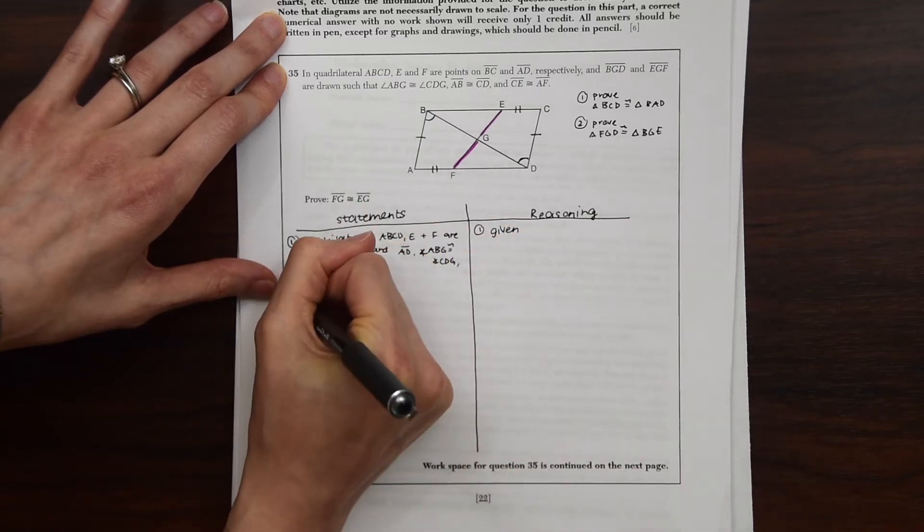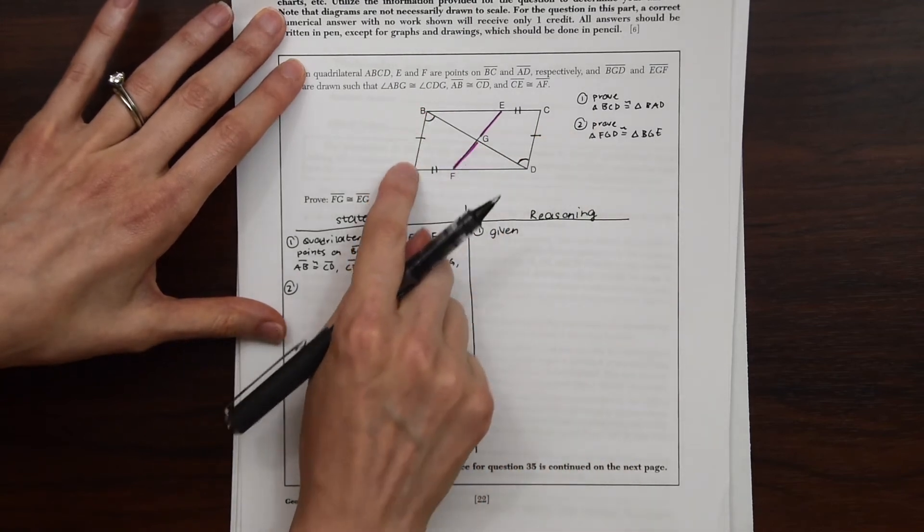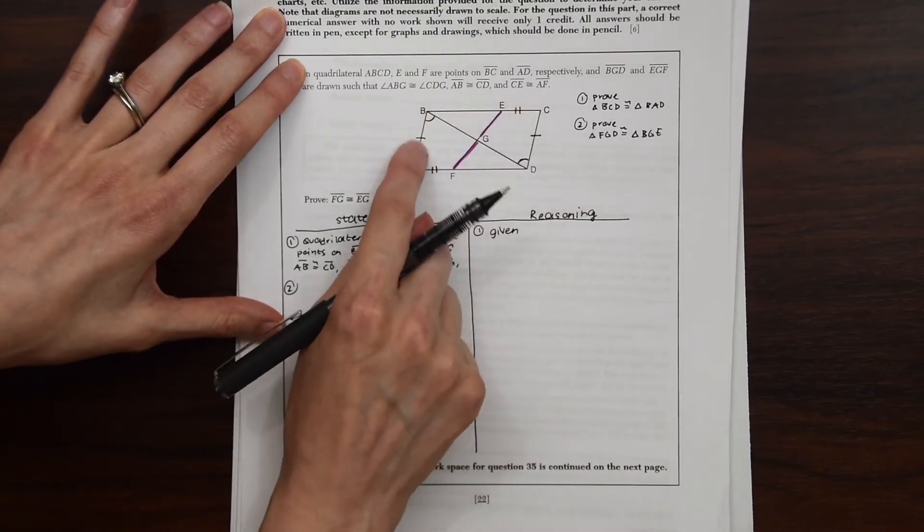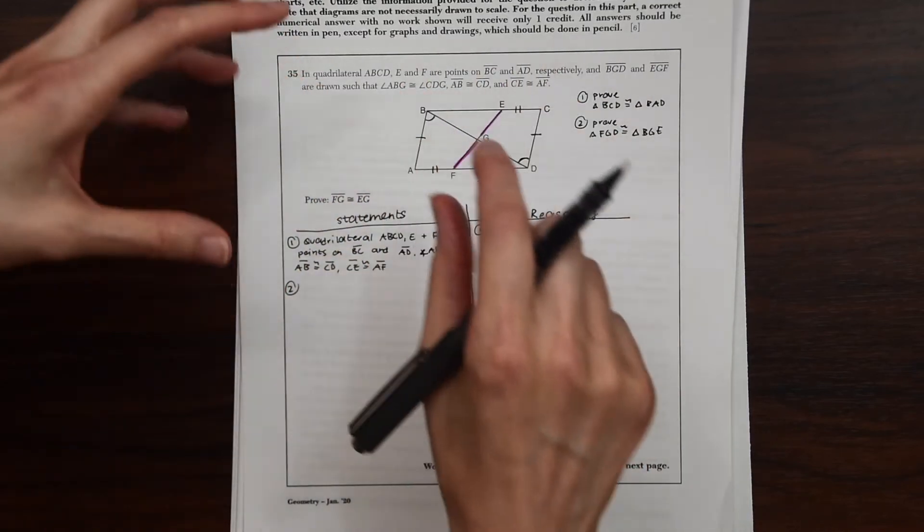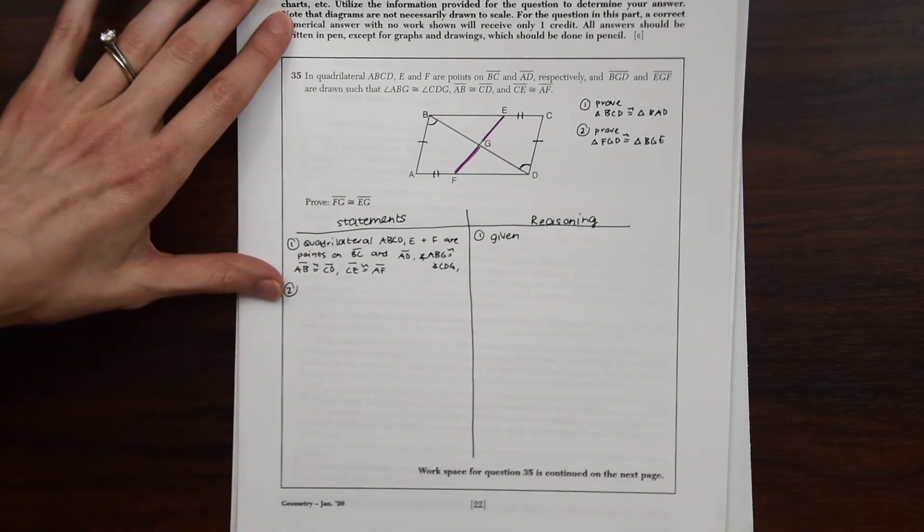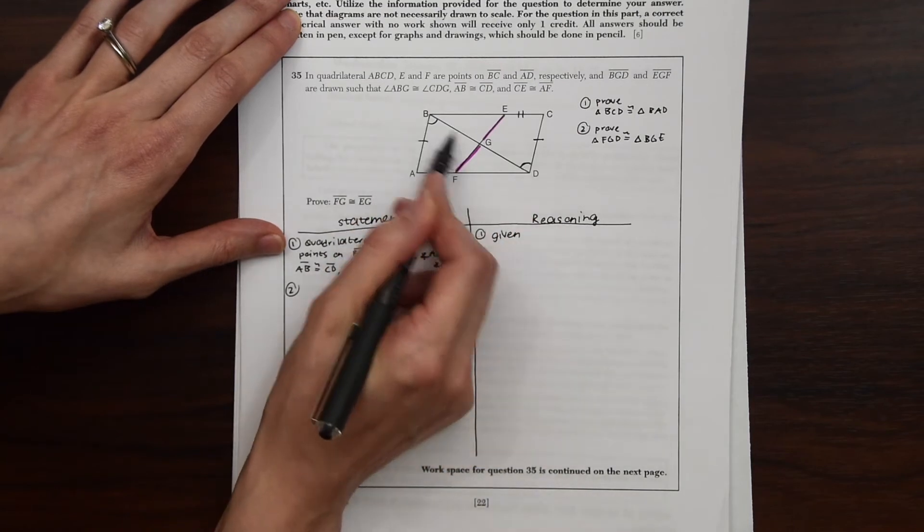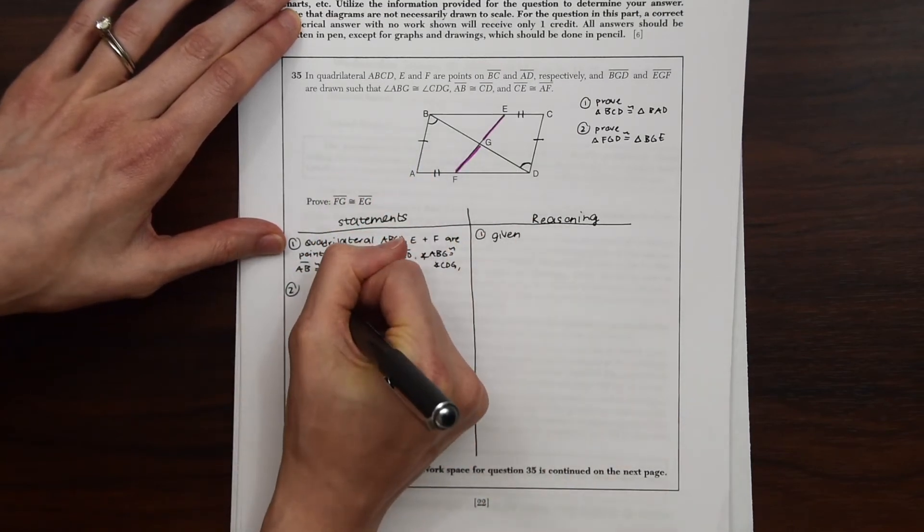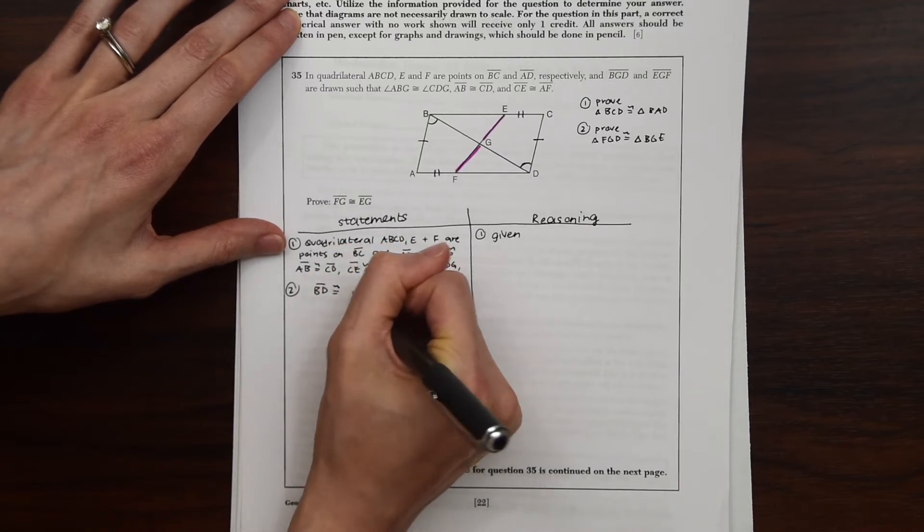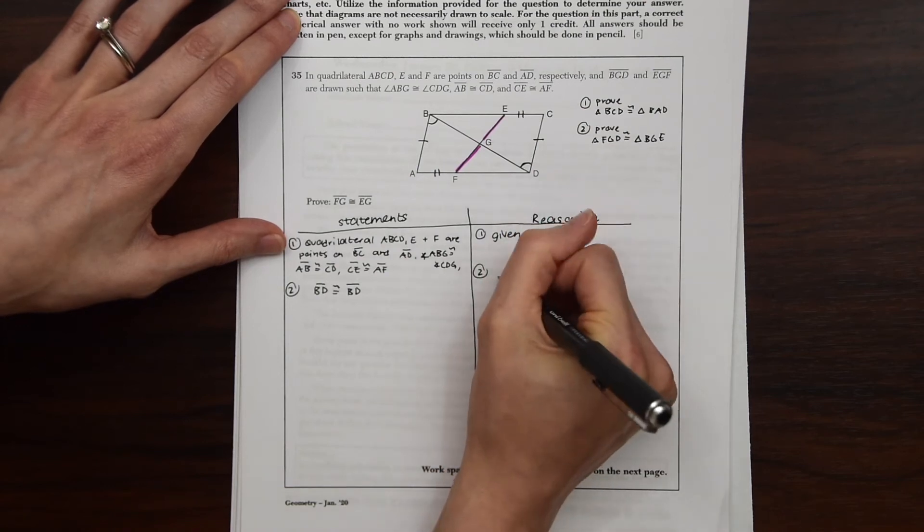So that's easy. So now we can start looking at our triangles, BCD, this big triangle, and then this other big triangle, BAD. So this kind of splits this parallelogram in half. So first, you can notice that side BD is congruent to itself based on the reflexive property. So let's write that out. BD is congruent to BD. And this is based on the reflexive property.